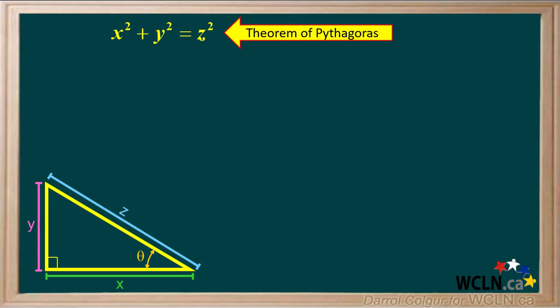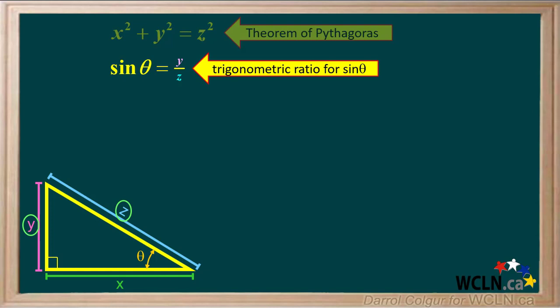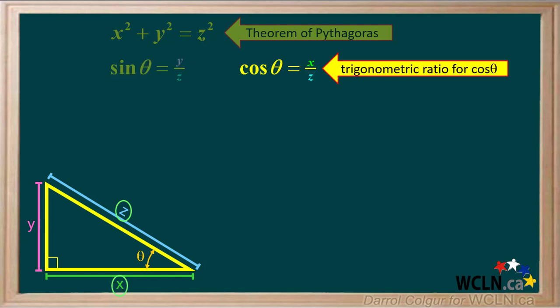Remember the Theorem of Pythagoras is x squared plus y squared equals z squared. Looking at the diagram of the triangle, the trigonometric ratio for sin theta is y over z, and the trigonometric ratio for cos theta is x over z.